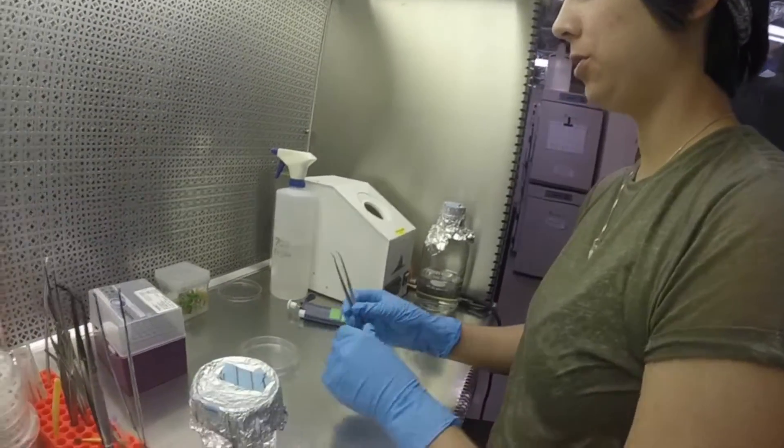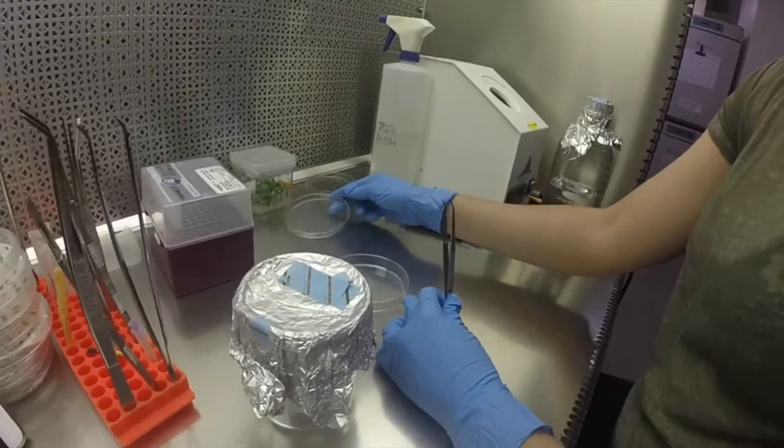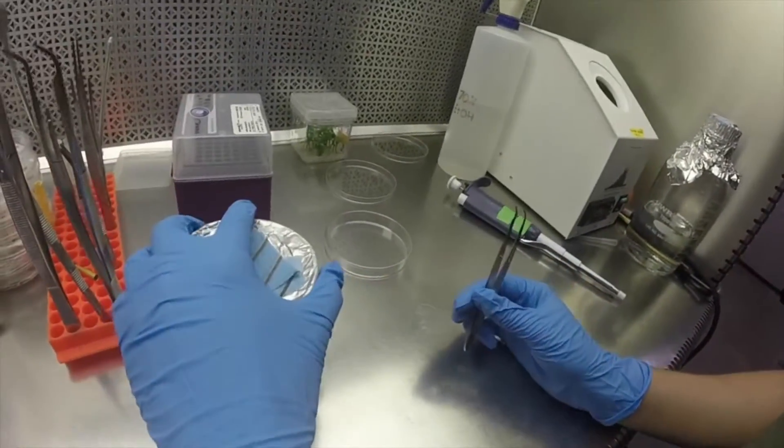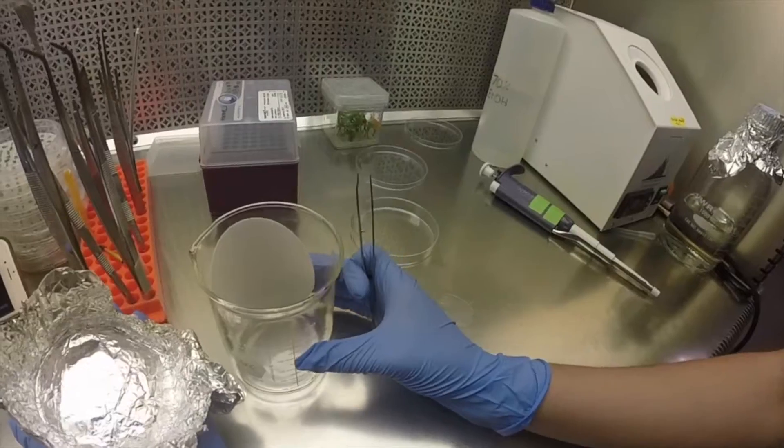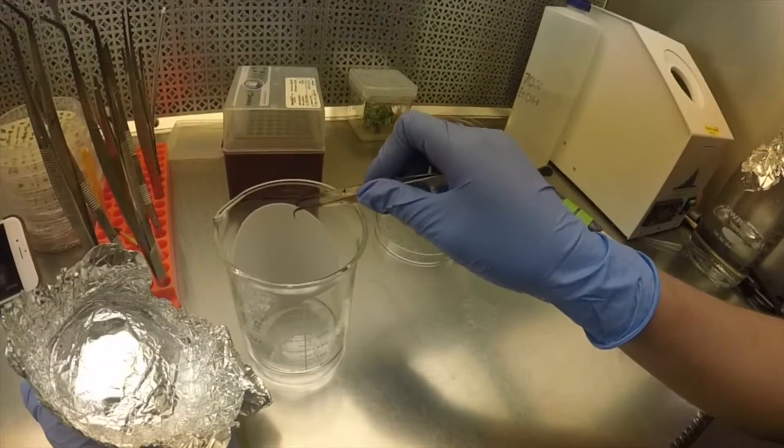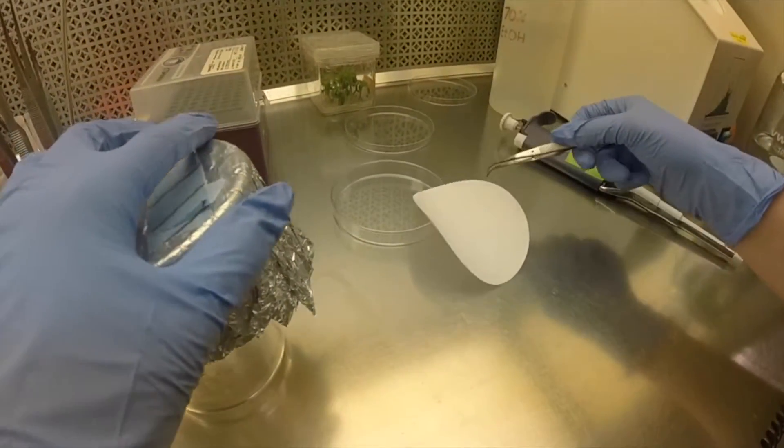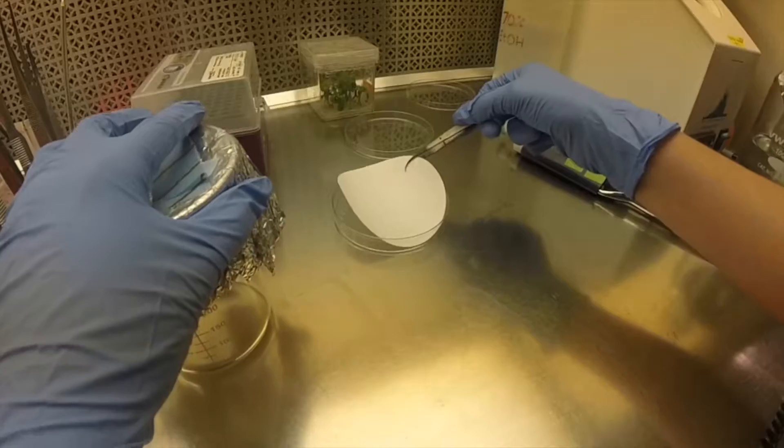What we're going to do first is make the culture that we're going to put the tomatoes on. We're using sterile filter paper. As you can see, these have been autoclaved. We're going to take one out and place it in the petri dish so it doesn't fall over.